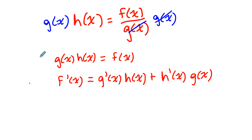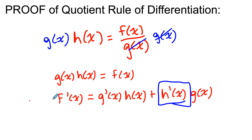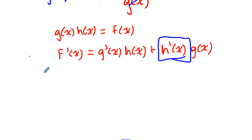Why did I bother doing this? Notice I now have an expression that has h'(x) involved in it, and that's what we're trying to figure out — the derivative of h(x), which is a quotient of two things. So now I have an equation which has h'(x) involved in it. I just have to isolate that, and then I have an equation for the derivative of h(x). Let's isolate h'(x) and start moving things away from it.